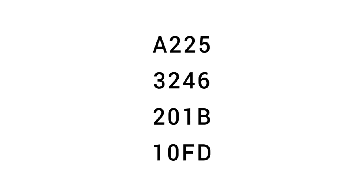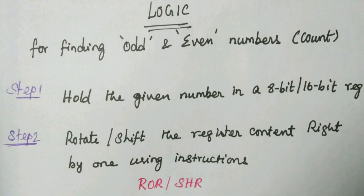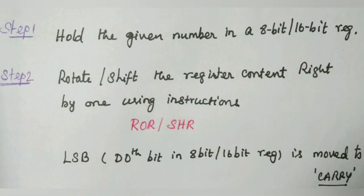Here we are going to discuss how to find the number of odd and even numbers in the given set. Let's take one example. Now we consider four numbers: A225, 3246, 20IB, 10FD. These are all 16-bit numbers. Four steps should be followed to find the odd and even numbers.